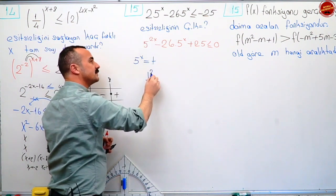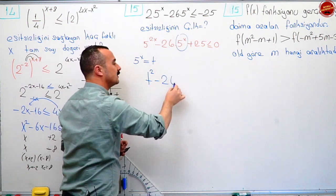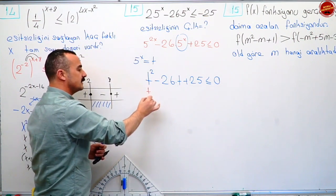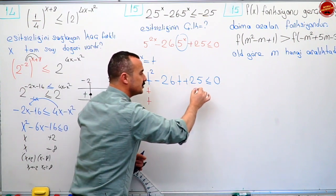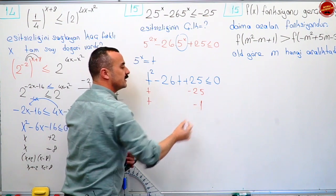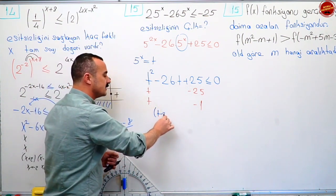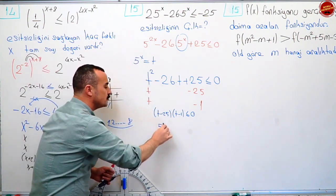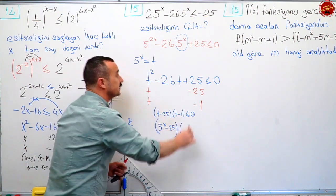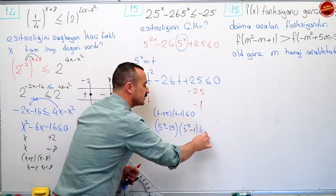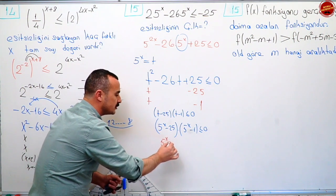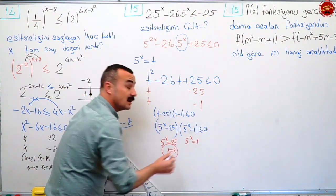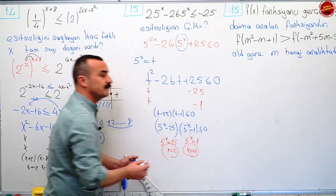T dedim. t'nin karesi oldu. Eksi yirmi altı tane t, artı yirmi beş küçük eşitmiş sıfırdan. Çarpanlarını ayırıyorum. Yirmi beş ile birin çarpımı, eksi yirmi altı elde edebilmek için ikisine de eksi. O zaman t eksi yirmi beş çarpı t eksi bir küçük eşit sıfır. Neye t demiştim? Beş üzeri x. Yani beş üzeri x eksi yirmi beş çarpı beş üzeri x eksi bir küçük eşit sıfır. Bunu sıfıra eşitlersem beş üzeri x'in yirmi beş olması lazım: x eşittir iki. Bunu sıfıra eşitlersem beş üzeri x'in bir olması lazım: x eşittir sıfır.